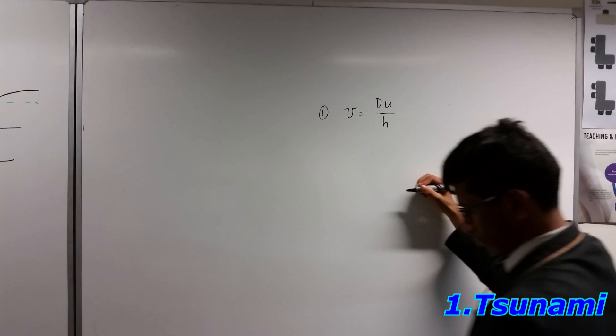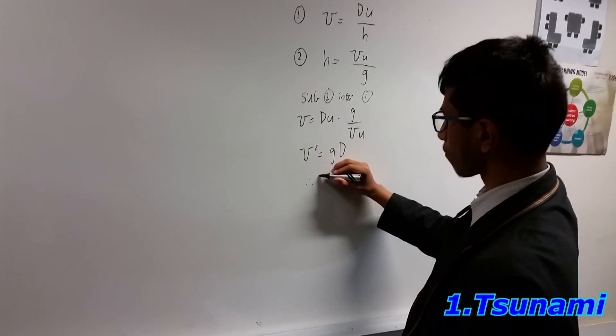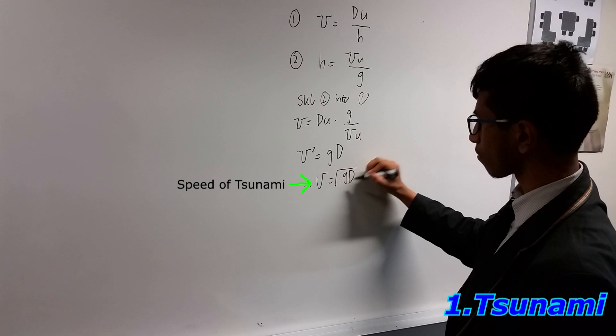Simplifying gives us equation 2. Using equation 1 and 2 and a little bit of algebra, we get the following relationship: u is equal to the square root of gd, where u is the speed of the tsunami, g is Earth's gravitational acceleration, and d is the depth from which the initial disturbance that caused the tsunami occurred.